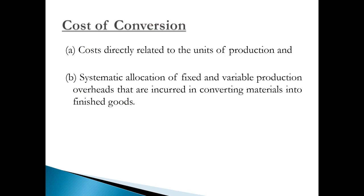Moving on to the second element — cost of conversion. This includes costs directly related to units of production (direct expenses) as well as indirect ones (overheads). Overheads are divided into fixed and variable; semi-variable overheads are split into fixed and variable portions. Fixed production overheads shall be allocated based on normal capacity of the production facility.